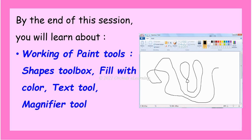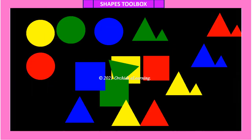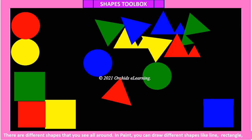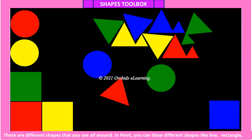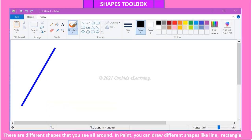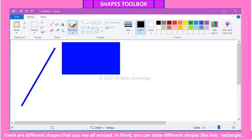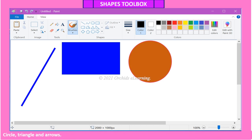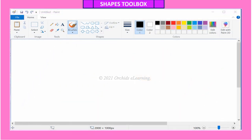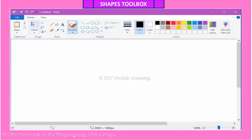There are different shapes that you see all around in Paint. You can draw different shapes like line, rectangle, circle, triangle, and arrows. To draw shapes in Paint, on the Home tab in the Shapes group, click a shape.